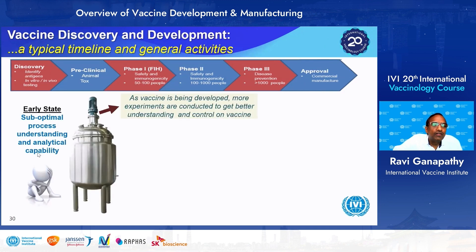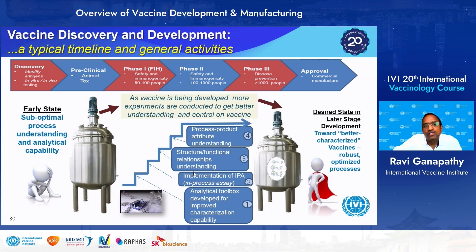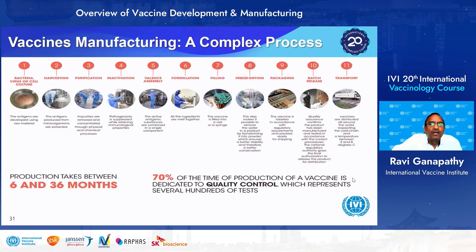At early process development, there is very low process understanding, but through successive analytical toolbox development, implementation of in-process assays, structural-functional relationship understanding, and attributes understanding between product and processes, we develop a better understanding, leading to robust, optimized processes. Manufacturing is a very complex process — starting from cell culture to final transport — taking up to 36 months depending on the vaccine candidate, and most of this time is spent on quality control.